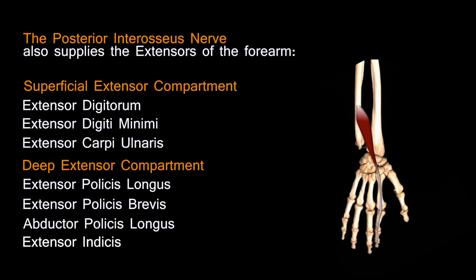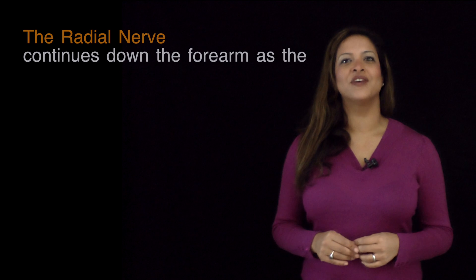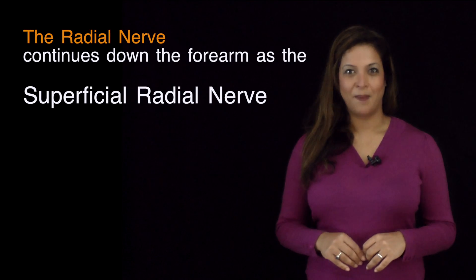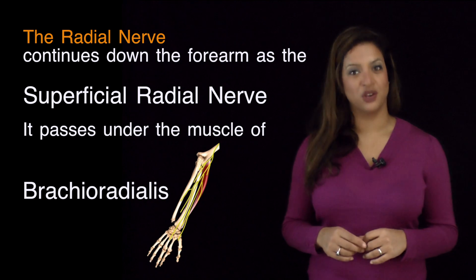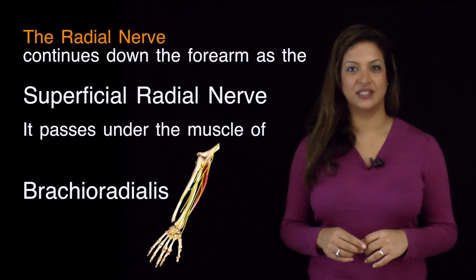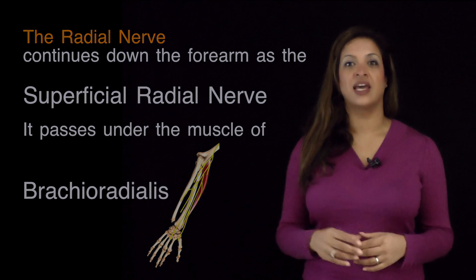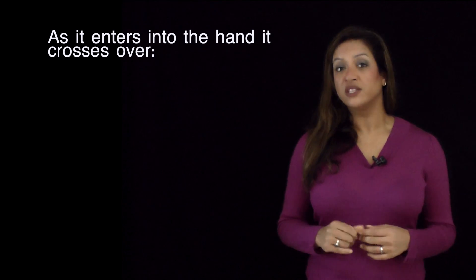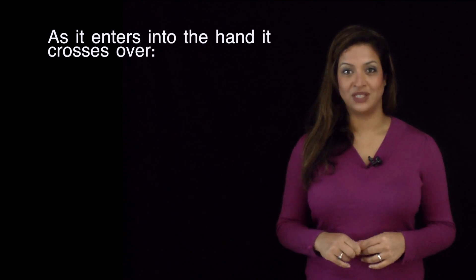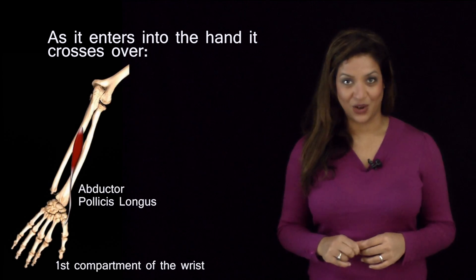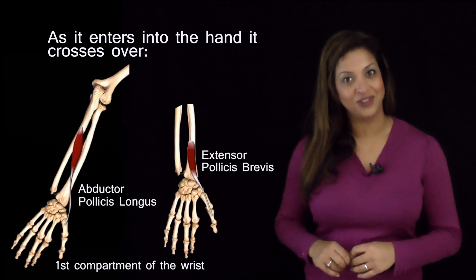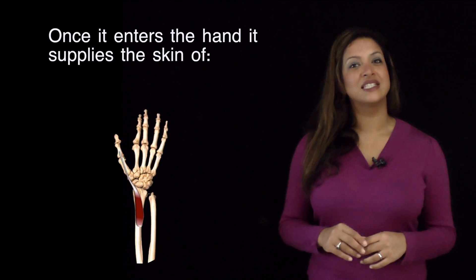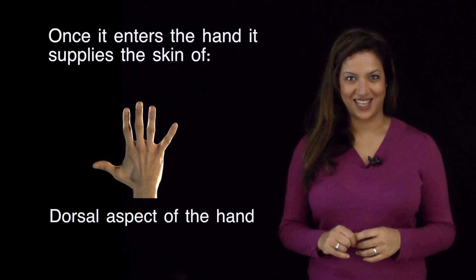The other part of the radial nerve continues down the forearm as the superficial radial nerve, passing underneath the brachioradialis muscle. As it enters the hand it crosses over the tendons of the first compartment of the wrist — abductor pollicis longus and extensor pollicis brevis — in the anatomical snuff box, before supplying the skin over the dorsal aspect of the hand.